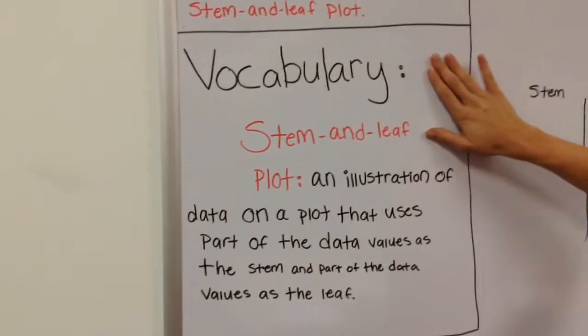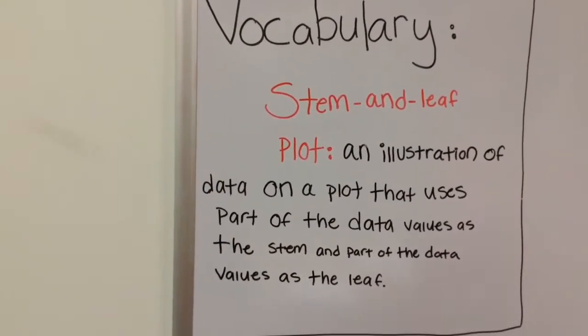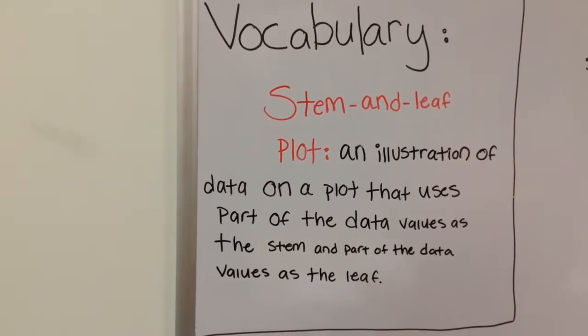So what is a stem and leaf plot? A stem and leaf plot is an illustration of data on a plot that uses part of the data values as a stem, and part of the data values as the leaf.